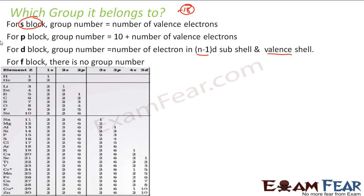So let us take some example. Hydrogen 1s, which block it belongs to? s block. So the valence number, the number of valence electrons will be my group number. So it becomes group 1. Correct.